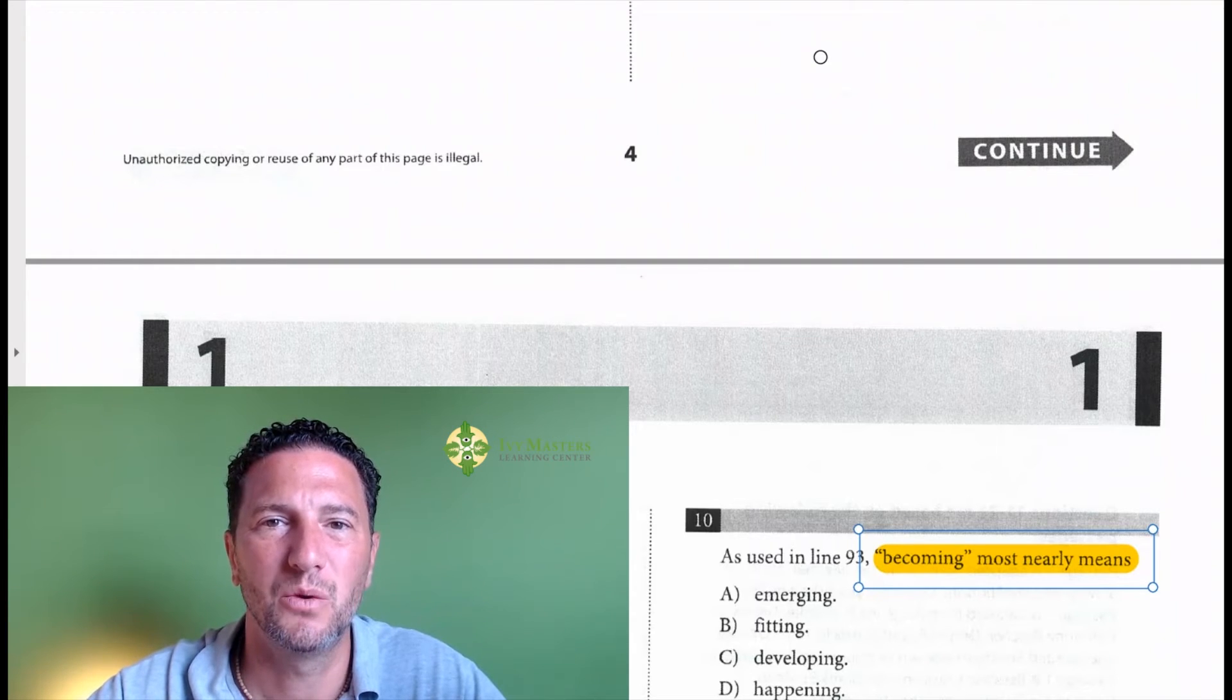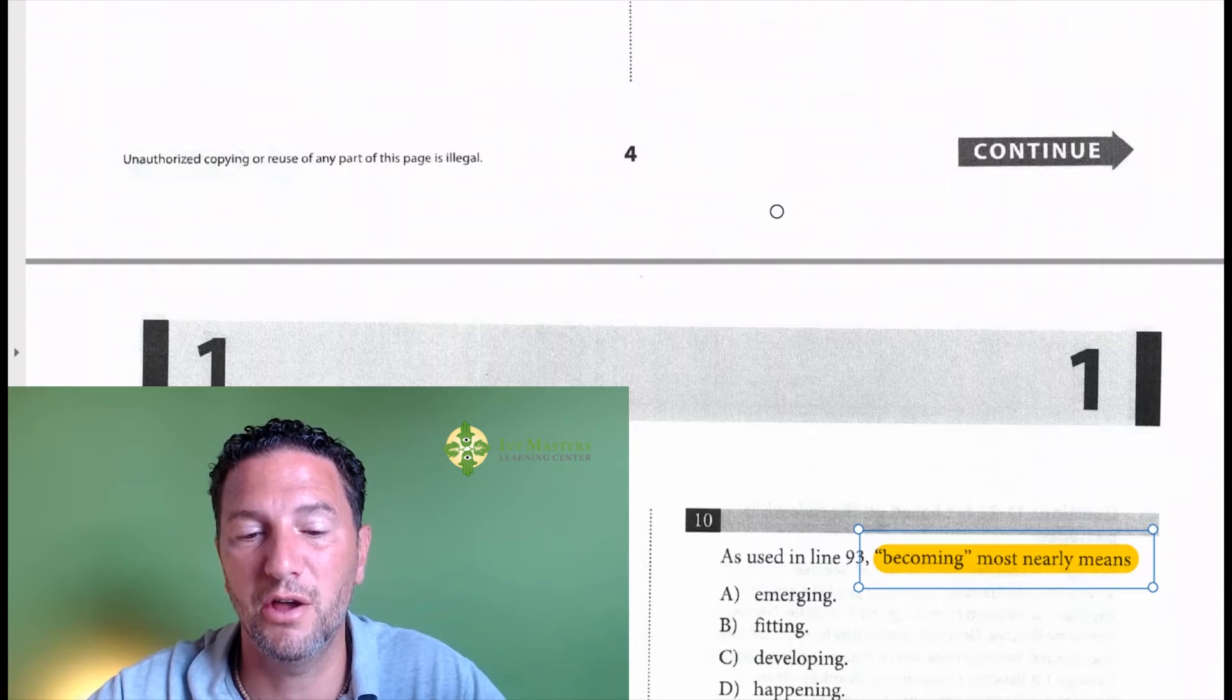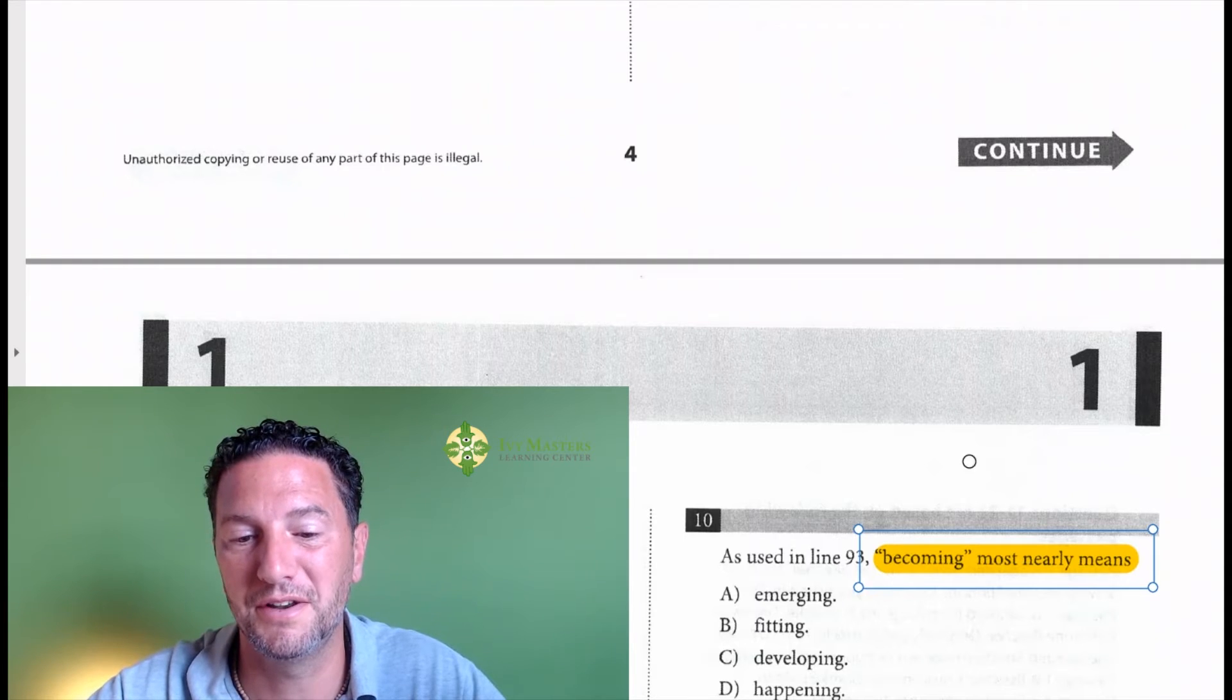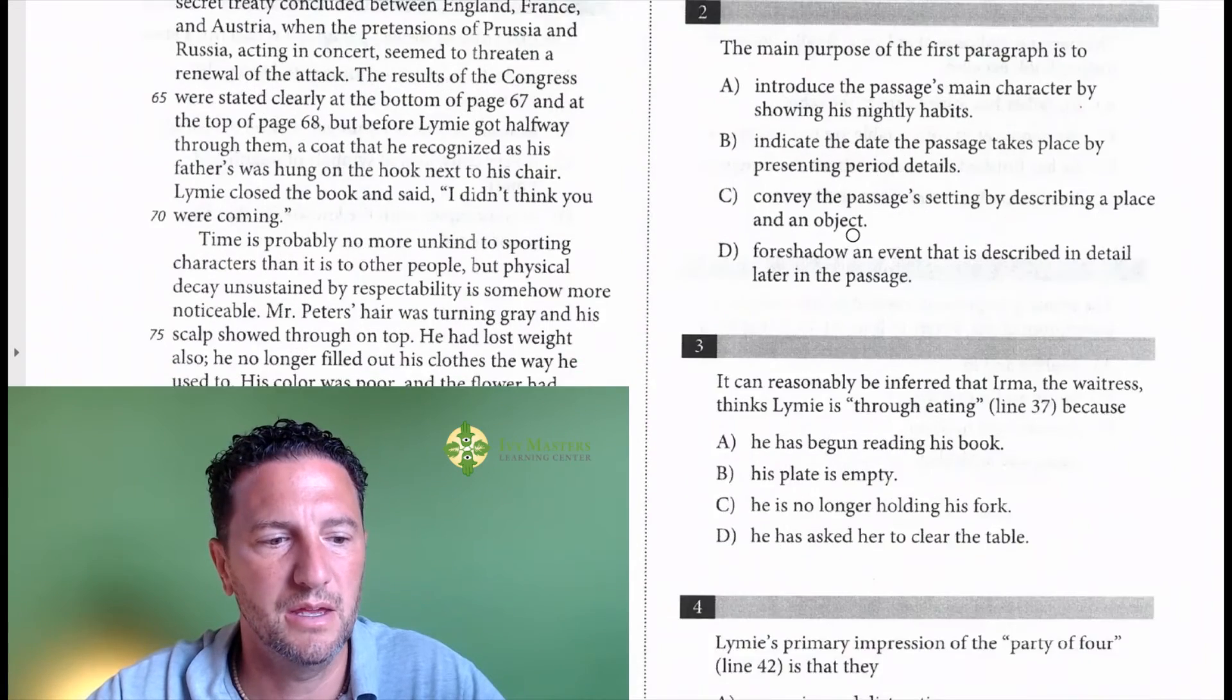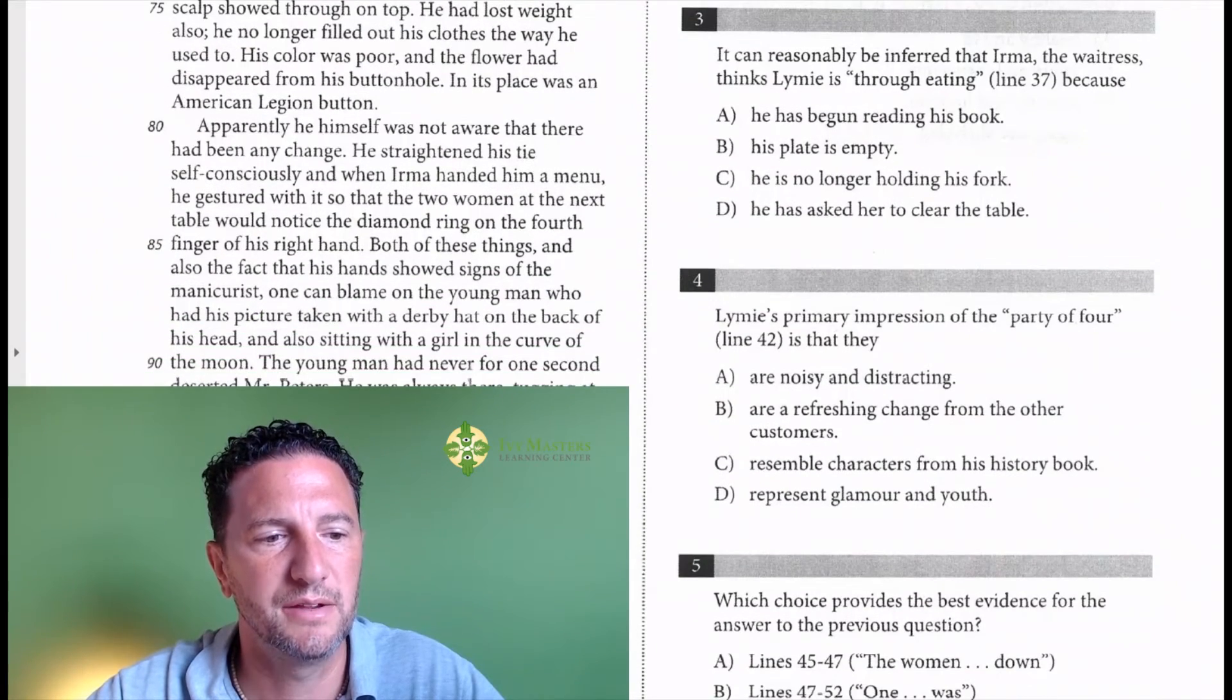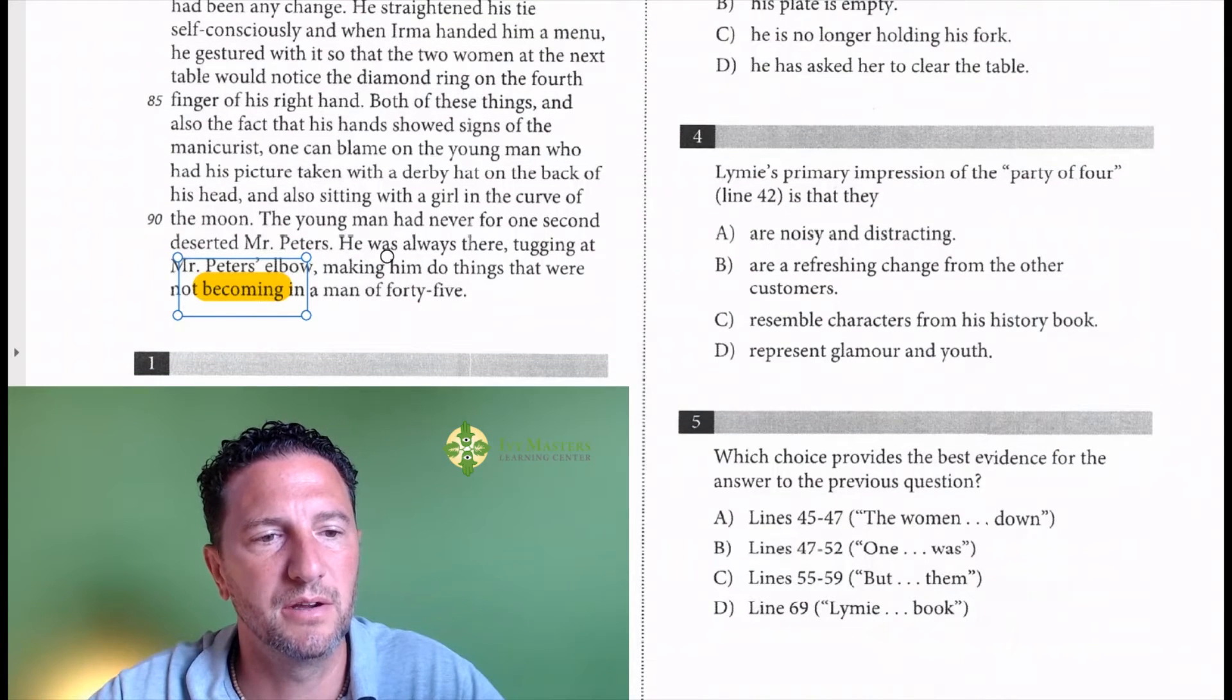Let's see which of those hints are helpful for number 10. So we're going to go to line 93 where we see the word becoming, and all the way at the end we see the word becoming right here.